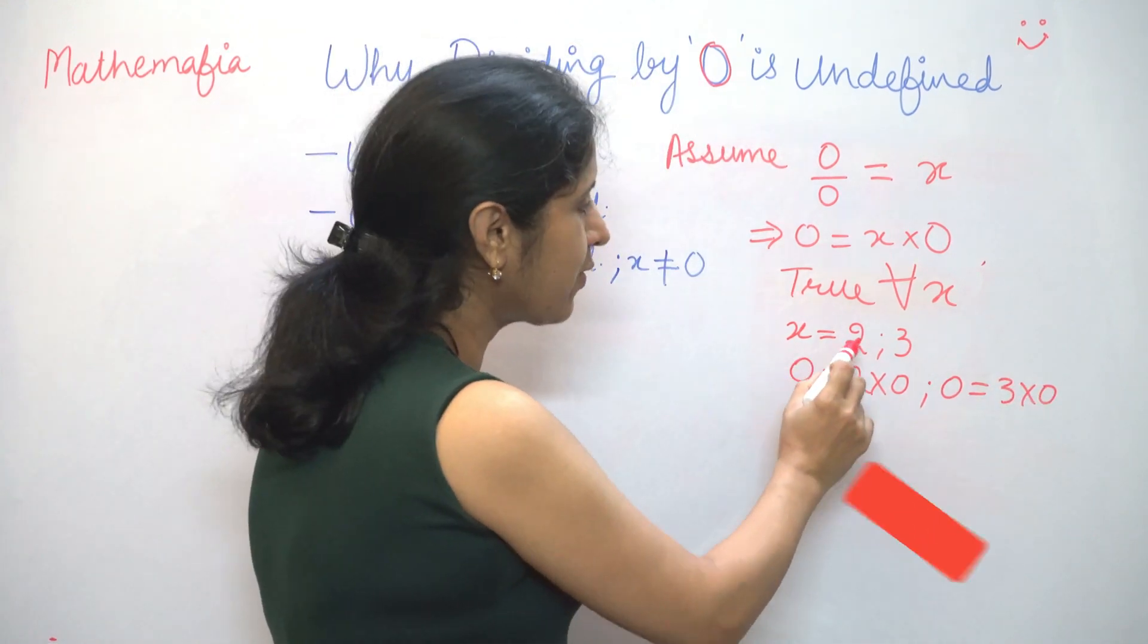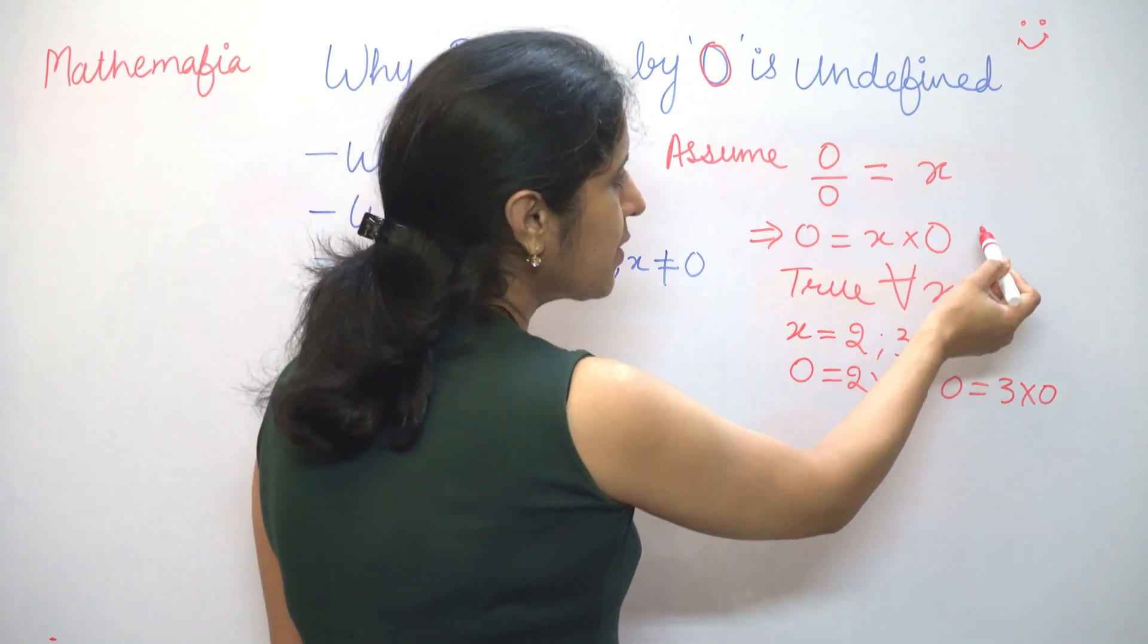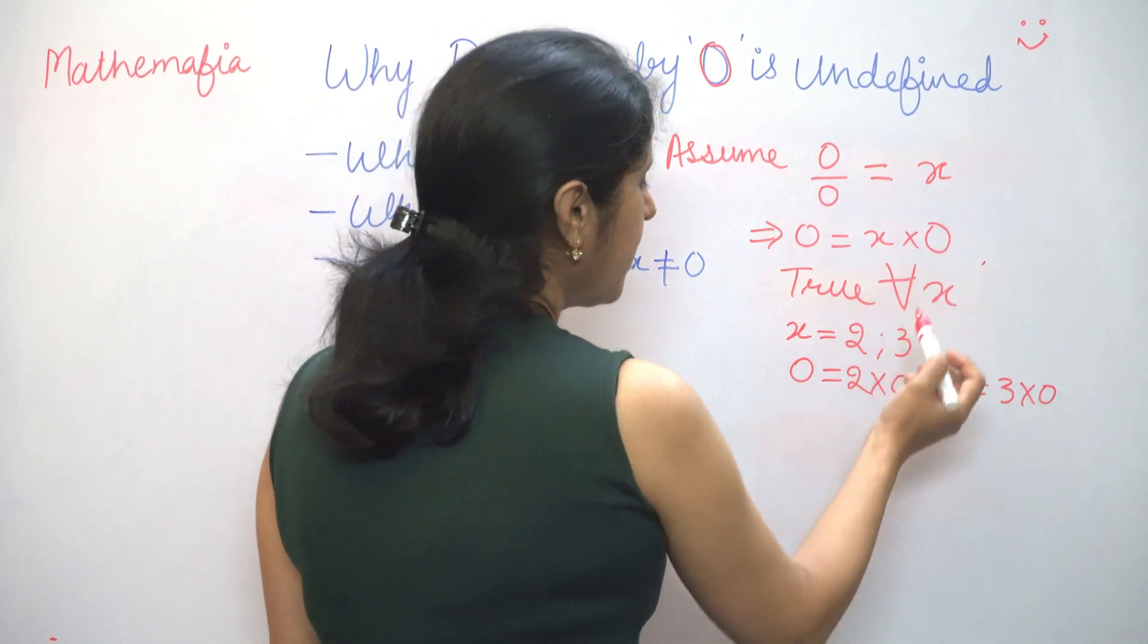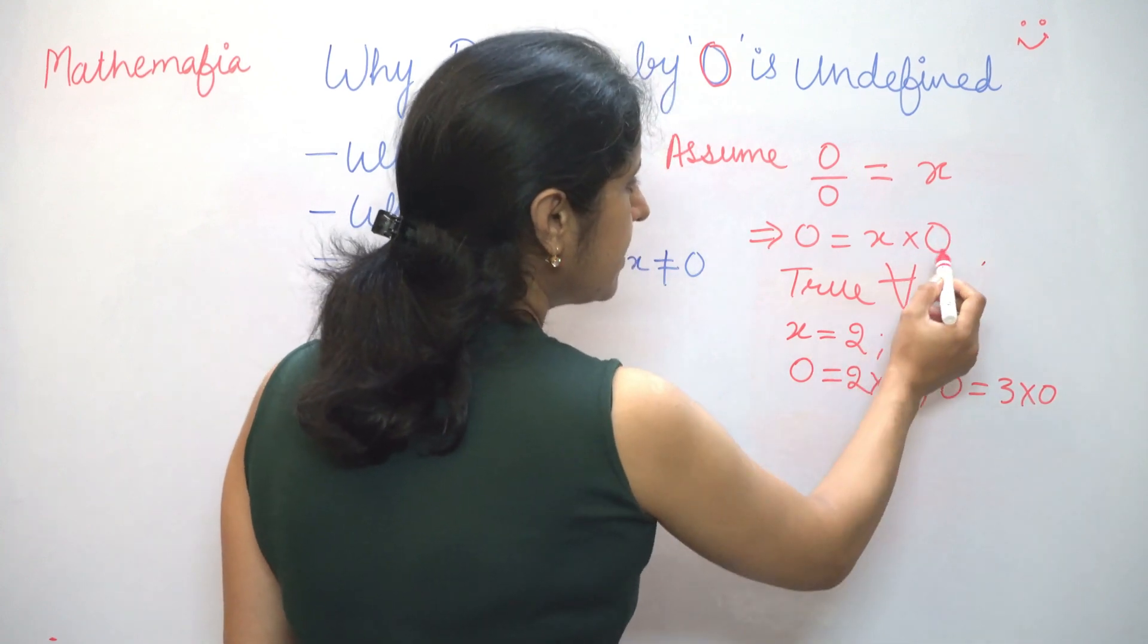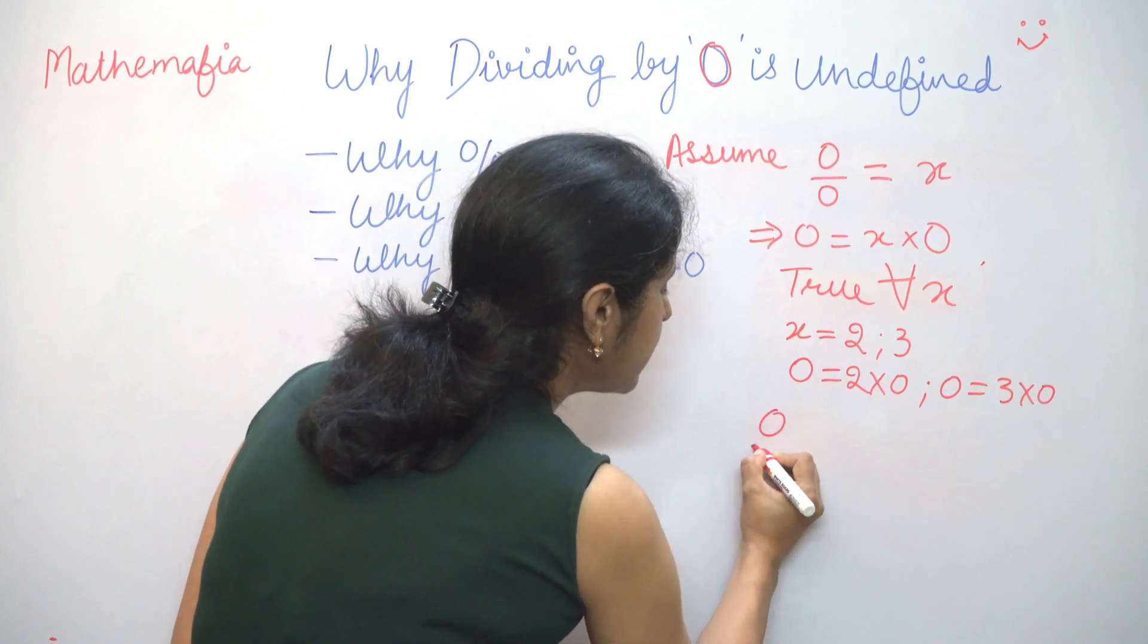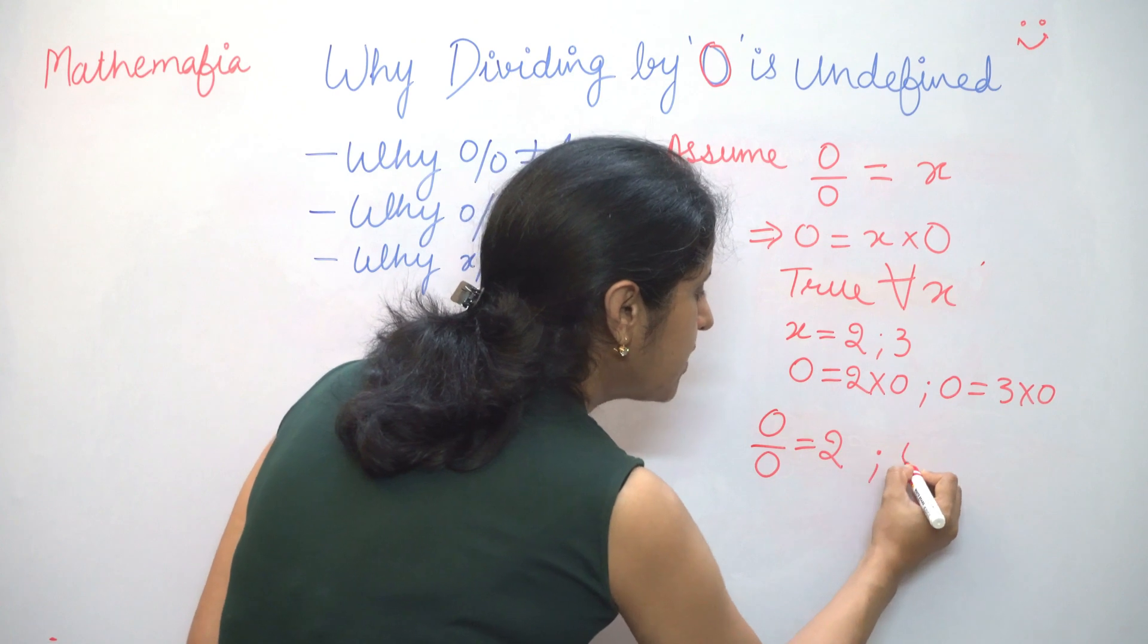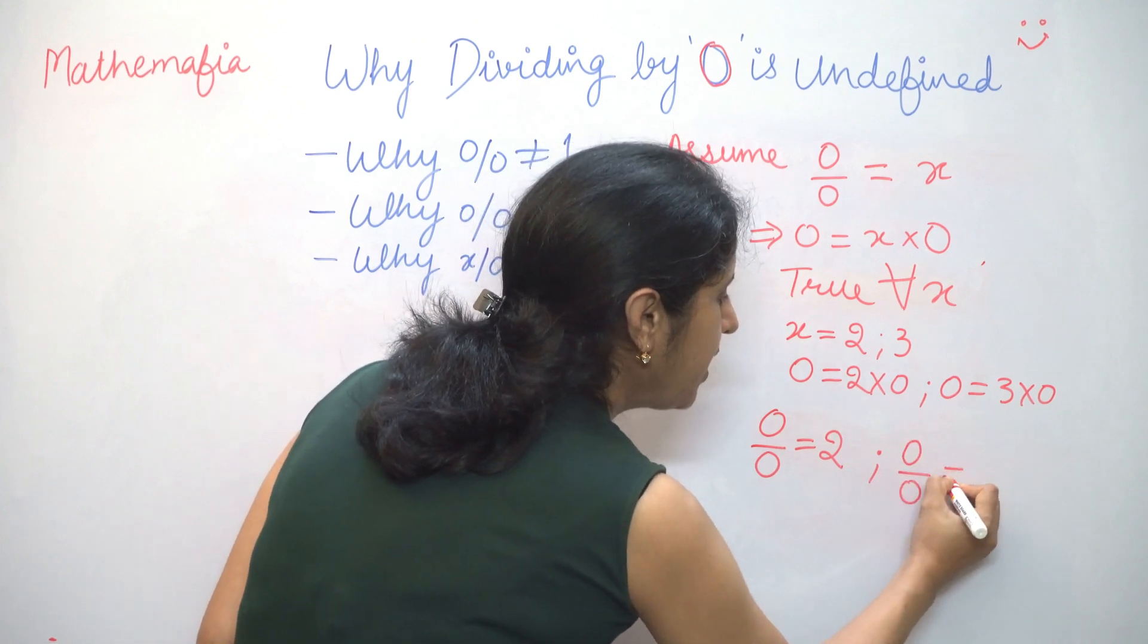So now we have considered two values of x which satisfy this equation, 2 and 3. Now, this equation was derived from here. So any value of x that satisfies this equation will also satisfy this obviously. So 0 by 0 would be equal to 2 and also 0 by 0 would be equal to 3.